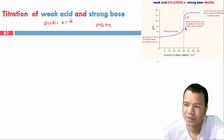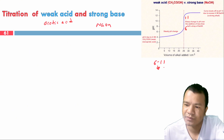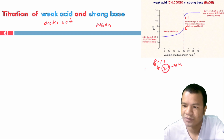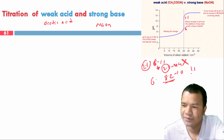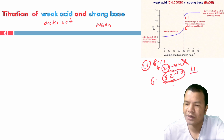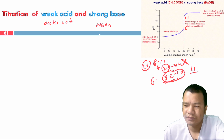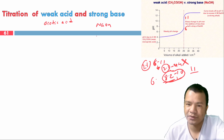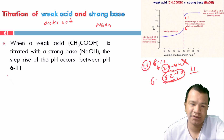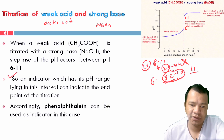For weak acid versus strong base, the steep rise in pH occurs over a range of approximately 6 to 11. If we take methyl orange with a range of 3.1 to 4.4, it does not fall within this steep rise region.